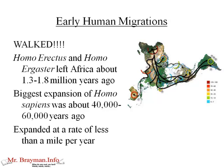Out of East Africa, we have a series of early human migrations. Humans were walking — no boats, no airplanes. There are waves of hominids and early humans leaving Africa; it's not like people just got up one day and started walking. Homo erectus and Homo ergaster probably left Africa about 1.3 to 1.8 million years ago. The biggest expansion of Homo sapiens — which evolved in Africa — was probably around 40,000 to 60,000 years ago. This migration is very slow, and humans are expanding at a rate of less than a mile per year.